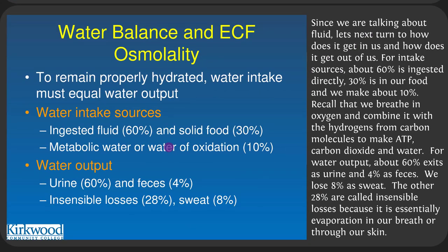Since we're talking about fluid, let's turn to how it gets in us and how it gets out. For intake, about 60% is ingested, 30% is in your food, and we make about 10%. Some desert mice make enough water that they never need to drink — that's because we breathe in oxygen and combine it with hydrogen from carbon molecules to make ATP and water. For water output, about 60% exits through urine, 4% is feces, 8% is sweat, and the other 28% are insensible losses like evaporation through skin or breath.